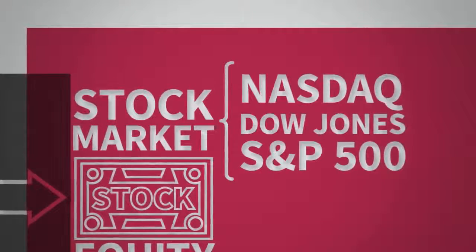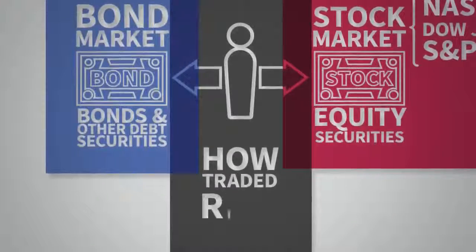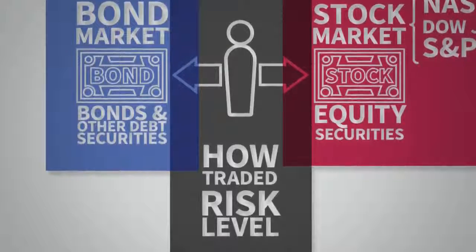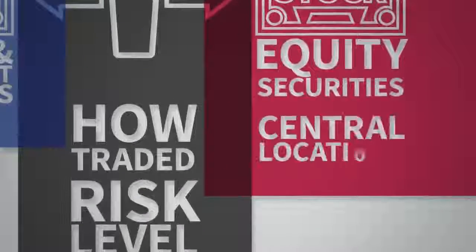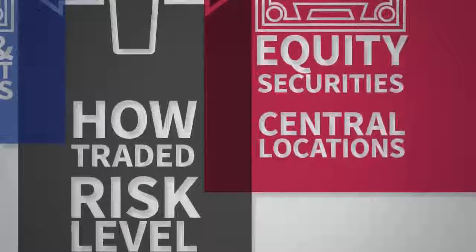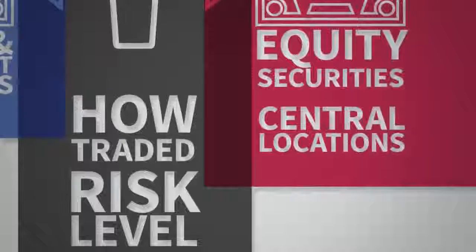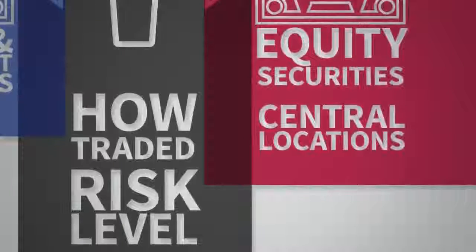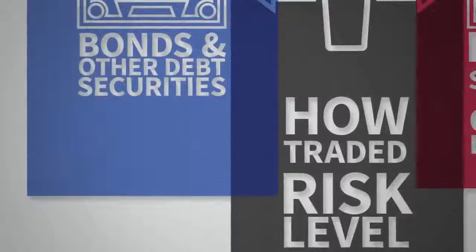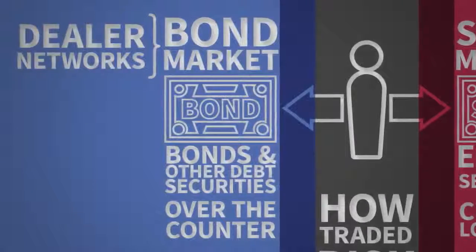The differences between the two markets involve how much product is traded and the risks they present. The stock market has central locations, such as the New York Stock Exchange, where stocks are bought and sold. The bond market has no such central trading location — bonds mainly trade over the counter, which usually occurs through a dealer network.